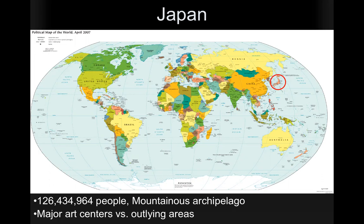It's a mountainous archipelago, and one of the themes throughout Japanese history — even in ancient times — is this contrast between the major art centers versus the outlying areas. The Japanese people, since ancient times, have preserved the country areas and have not allowed urban areas to encroach on natural places. Despite the high population in a small area, there are plenty of country areas that are seemingly untouched.